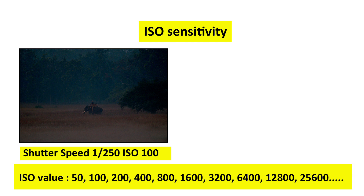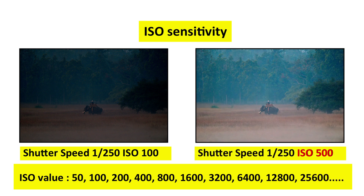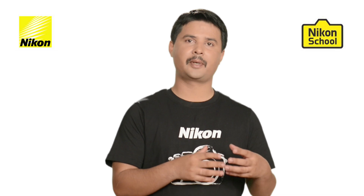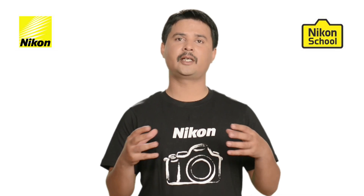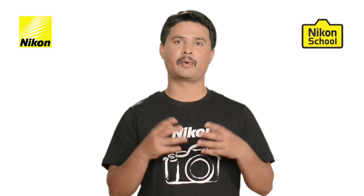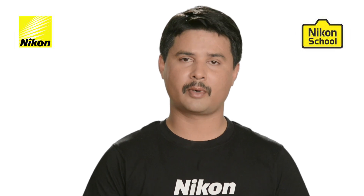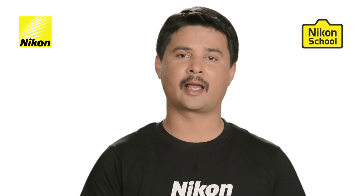you can increase the ISO number in the camera settings. These numbers start from 50 in some cameras, and from 100 in others, going up to 3200, 6400, and in high-end bodies up to 25600. As you increase these numbers, you tend to increase the brightness of the image. So if you do not want to change shutter speed and aperture but still want a properly exposed image, let us see how ISO helps in that.